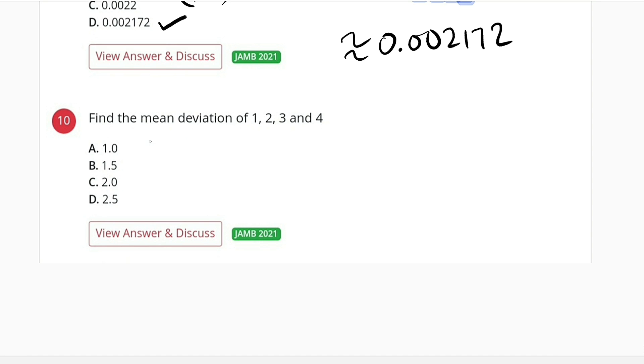So we have mean which is x bar equal to 1 plus 2 plus 3 plus 4 divided by number of items, 1, 2, 3, 4. This is equal to 1 plus 2 is 3, 3 plus 3 is 6, 6 plus 4 is 10, 10 divided by 4 which is equal to 2.5.